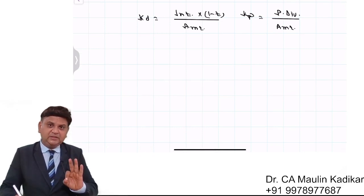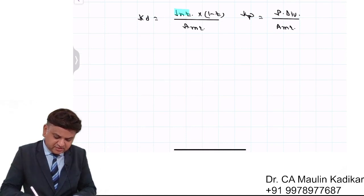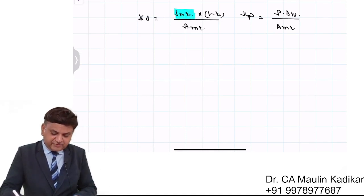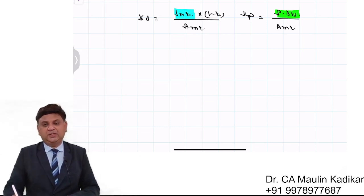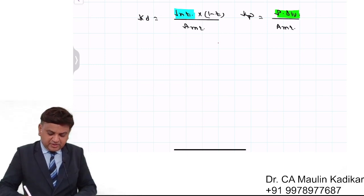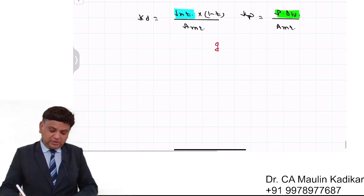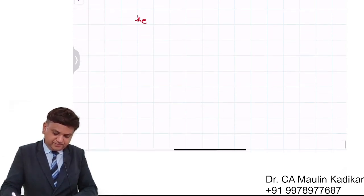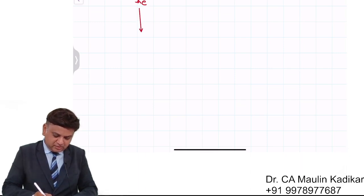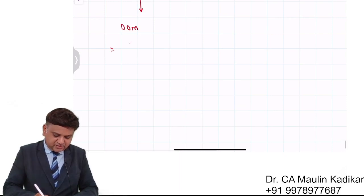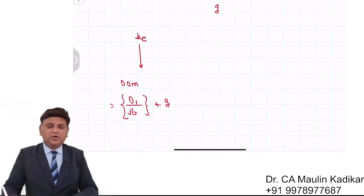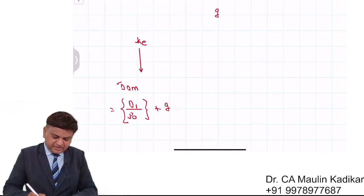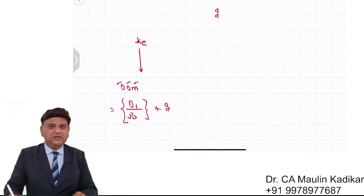In case of the debenture, the amount of interest remains the same. In case of the preference share, the amount of preference dividend remains the same. But that is not the case for equity shares — the equity dividend is going to grow at the rate G, where G is the growth rate. So the cost of equity is calculated using the Dividend Discount Model approach as D1 upon P0 plus growth G.